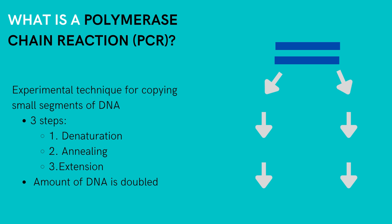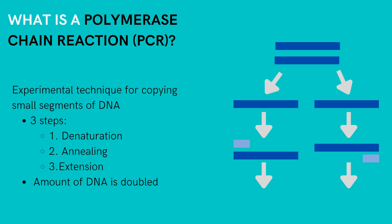There are three steps to a PCR which include denaturation, annealing, and extension. Denaturation is responsible for breaking up the two strands in the DNA double helix. This happens by heating up the mixture, which causes the hydrogen bonds between the DNA strands to break. During the annealing step, the temperature is decreased to allow the sample to be cold enough so the primers can bind to each end of the template strand. Last, during the extension step, an enzyme known as DNA polymerase attaches to the primers, making a copy of each template strand.